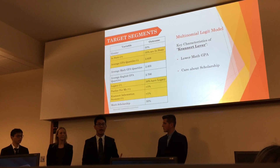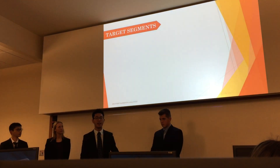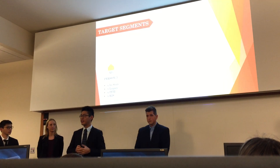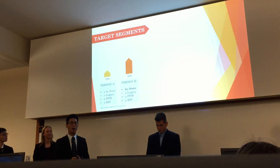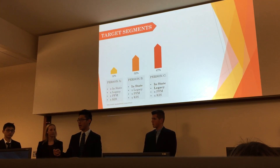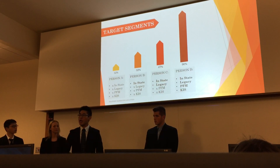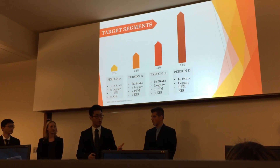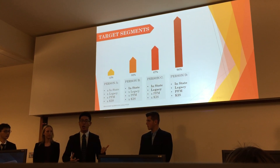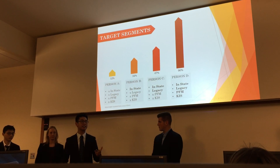For example, if a student is not in-state, has no legacy, and did not attend Purdue for Me or the Krannert information session, the likelihood of coming to Krannert is 12%. If he's an in-state student, that rises to 32%. If he's both in-state and has legacy, it's 47%. But if that student attended both Purdue for Me and the Krannert information session, the number jumps to 90%. The key insight: if we can get our Krannert Lovers to participate in Purdue for Me or the Krannert information session and target them with the right marketing assets — career job opportunity, career alumni, physical safety, and affordable financial aid — the likelihood of them coming to Krannert is 90%.